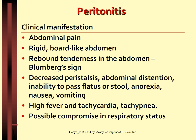Clinical manifestations of peritonitis include abdominal pain, which is the most common symptom. A universal sign of peritonitis is rebound tenderness over the involved area due to inflammation, referred to as the Blumberg sign. This is also accompanied with muscular rigidity and spasms.